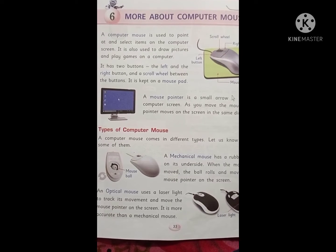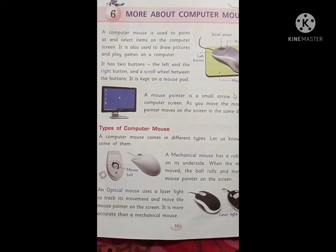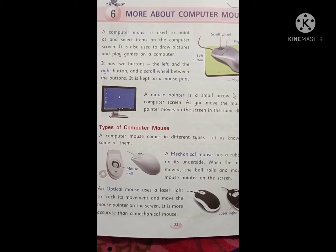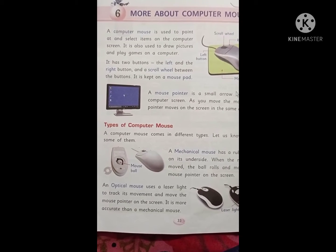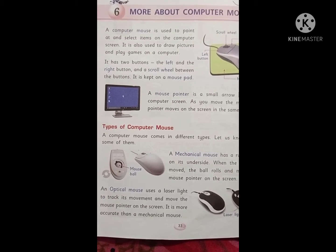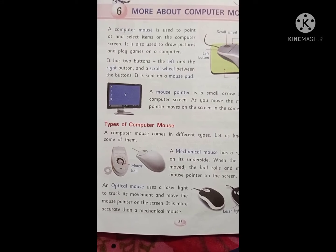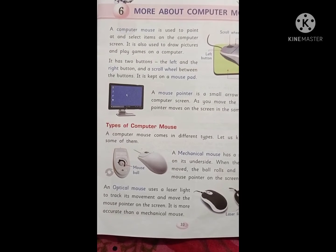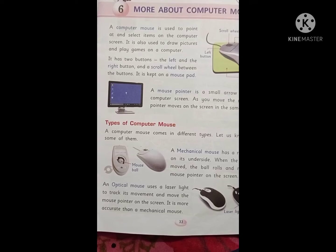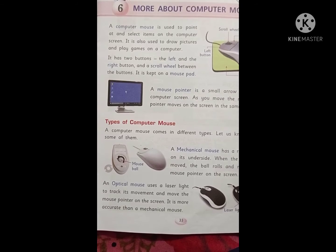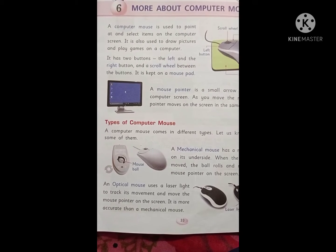So what is the use of computer mouse? Computer mouse is used to point and select items on the computer screen. With the help of this mouse, we can draw pictures, we can play games, we can color the pictures, we can type something, we can select items. All these can be done with the help of this computer mouse.